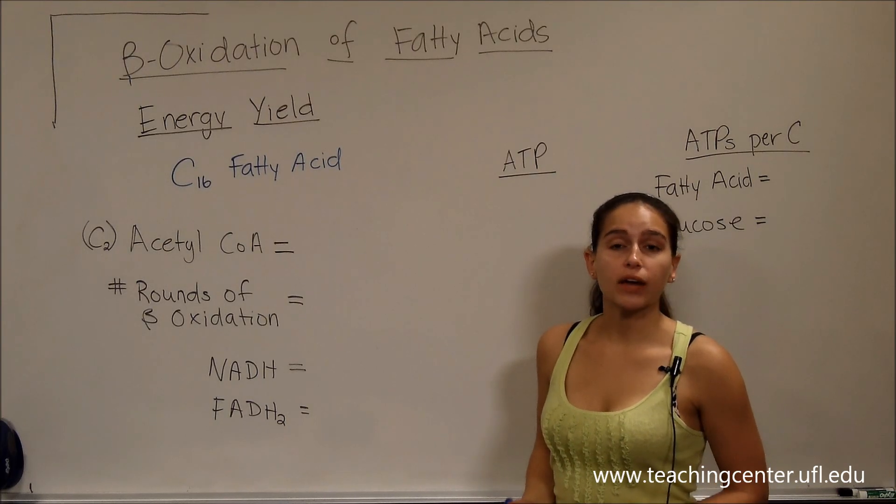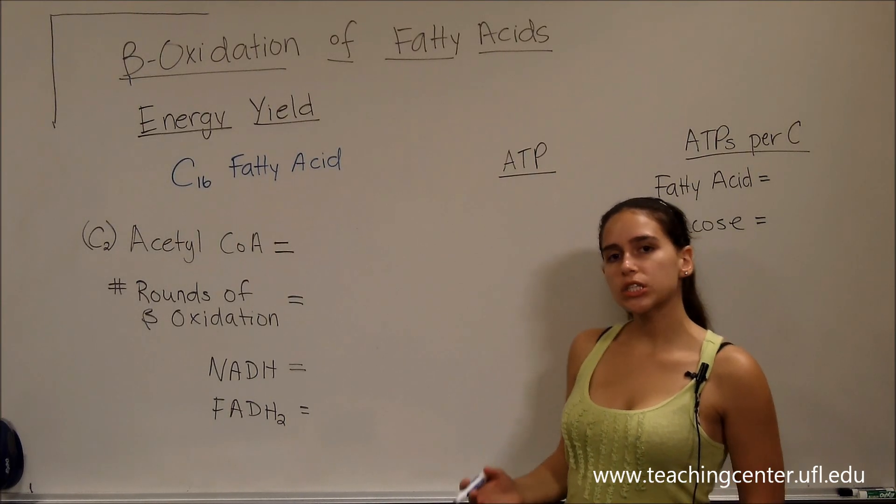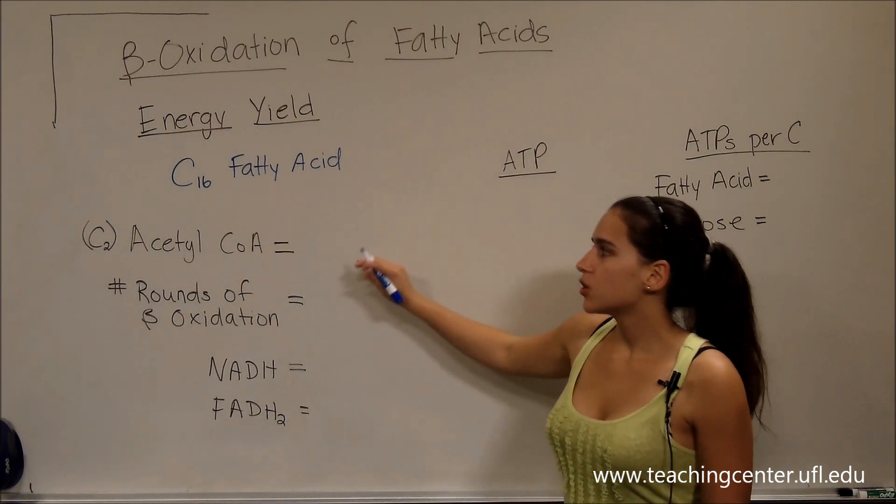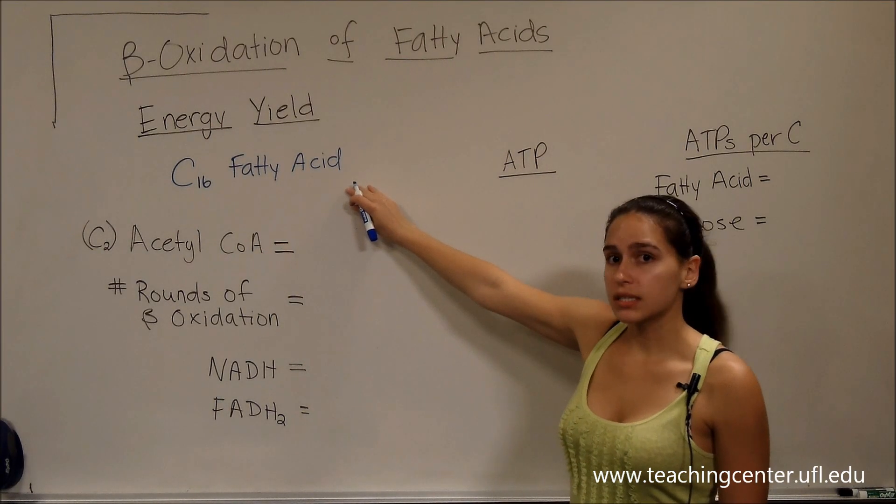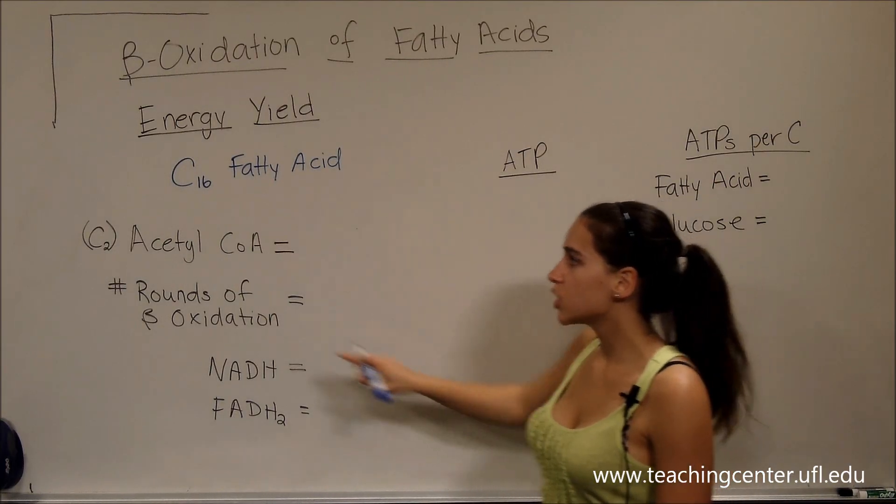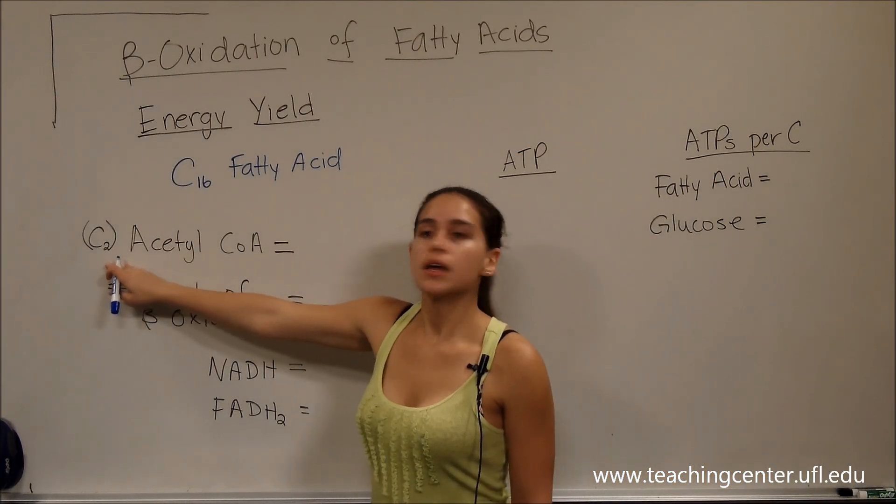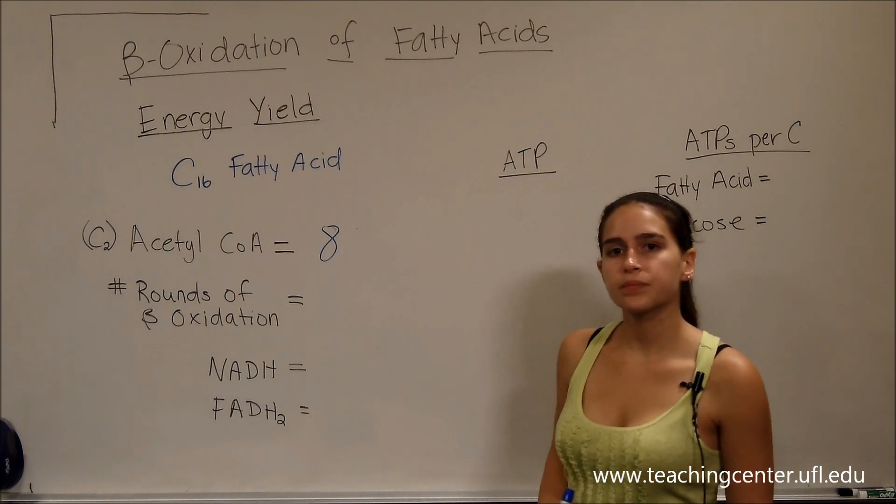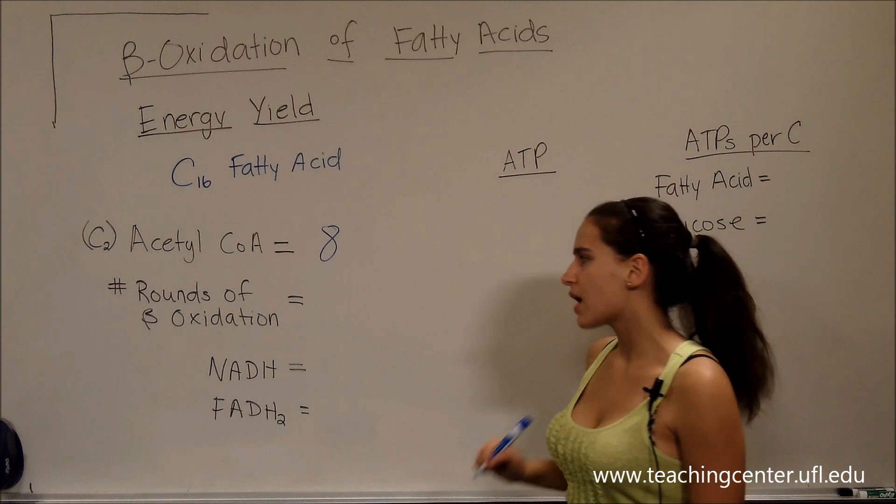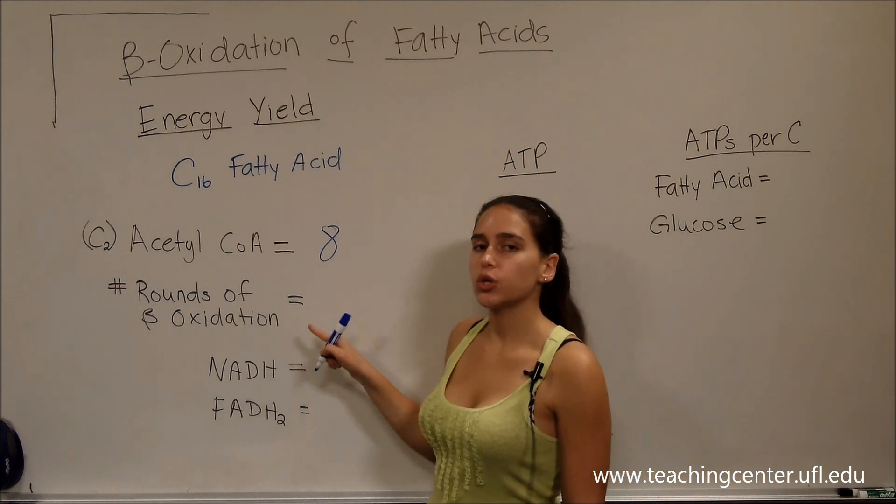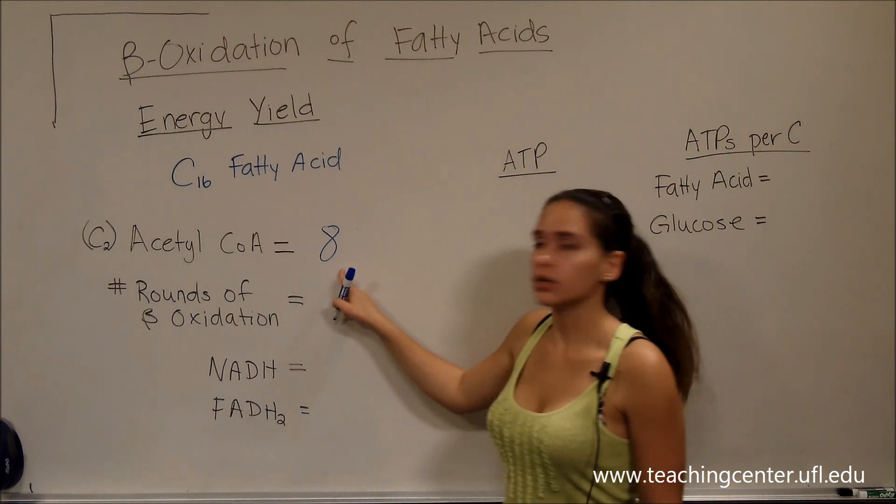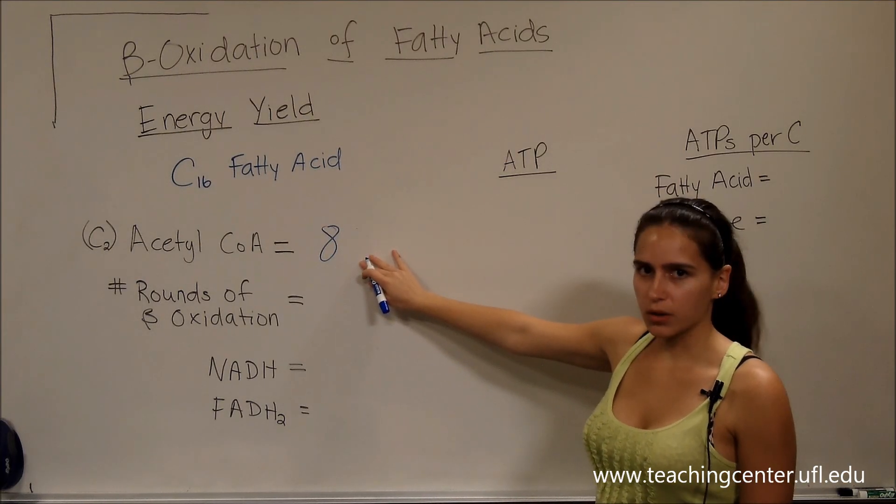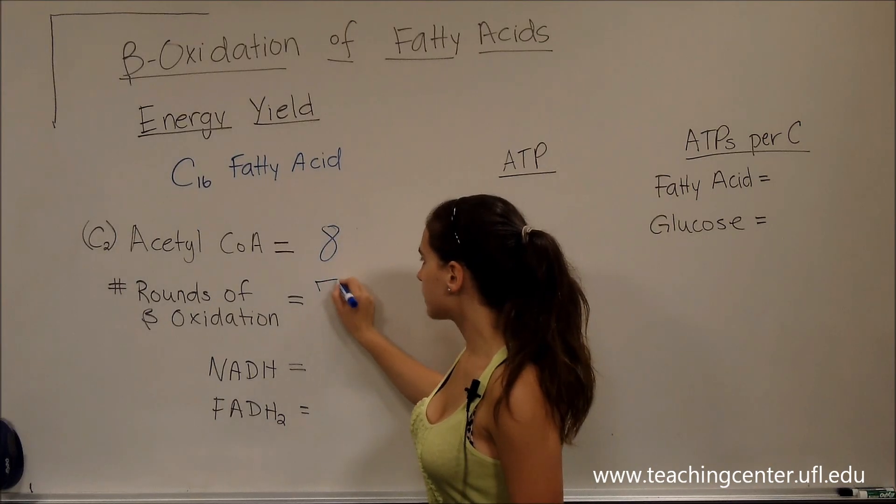So, how much energy do we get from beta oxidation? Let's look at the example we have been using of the 16-carbon fatty acid. How many acetyl-CoA's do we get per 16 carbons? If acetyl-CoA has two carbons, then we just divide 16 by 2, it's going to give us eight acetyl-CoA's. How many rounds of oxidation do we need to undergo to get those eight acetyl-CoA's? A little trick is to look at the number of acetyl-CoA's and just subtract one. That's going to be seven.